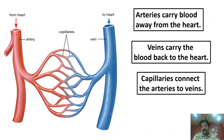So how does blood flow? Remember this carefully: artery → smaller artery (arteriole) → capillaries → smaller vein (venule) → vein → back to the heart. So the sequence is: artery, arteriole, capillaries, venule, vein, and back to the heart.